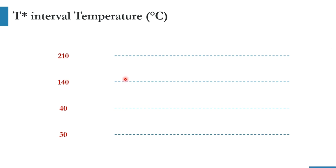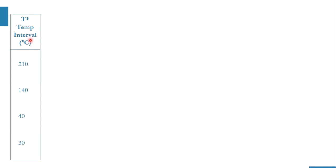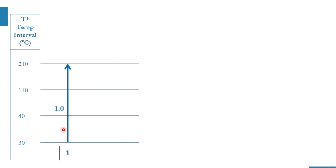There are three intervals: 210 to 140, 140 to 40, and 40 to 30°C. The cold stream (labeled blue) goes from 30°C to 210°C, and the hot stream goes from 140°C to 40°C. Now for the T* temperature intervals — 210, 140, 40, 30 — stream one (cold) has CP value of 1, and the hot stream has CP of minus 1.8, since in the formula it appears as CP of C minus CP of H.